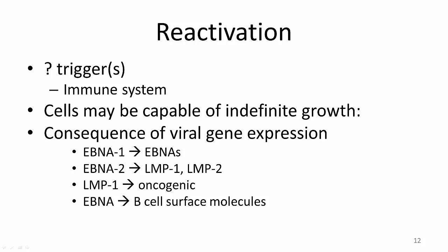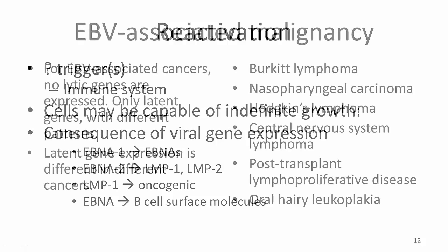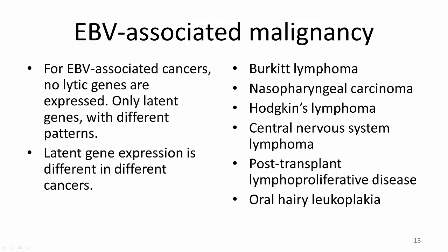Two of the EBV latent genes encode proteins that transactivate, or increase the expression of, other viral genes. EBNA1 leads to transactivation of other EBNA proteins, whereas EBNA2 transactivates the expression of two EBV latent membrane proteins, LMP1 and LMP2. LMP1 can act as a direct oncogene in some transformation assays. Other EBV latent gene products can also transactivate the expression of some B cell genes, such as B cell surface molecules. Reactivated EBV-infected cells can ultimately transform into a number of different types of malignancy.